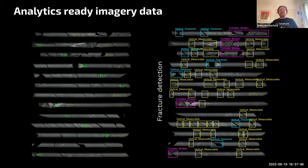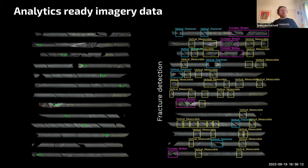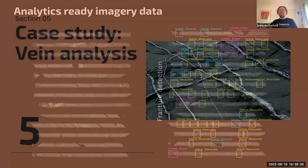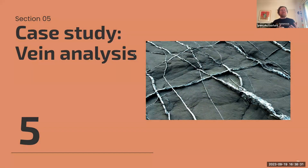Once the image has depth information, we can classify different kinds of breaks in the core. Knowing how rock breaks speaks to its stability — important when digging tunnels or building walls through it. A computer vision model can detect these things semi-automatically, replacing what would traditionally be done by a geotechnical engineer painstakingly moving through one meter of rock at a time.